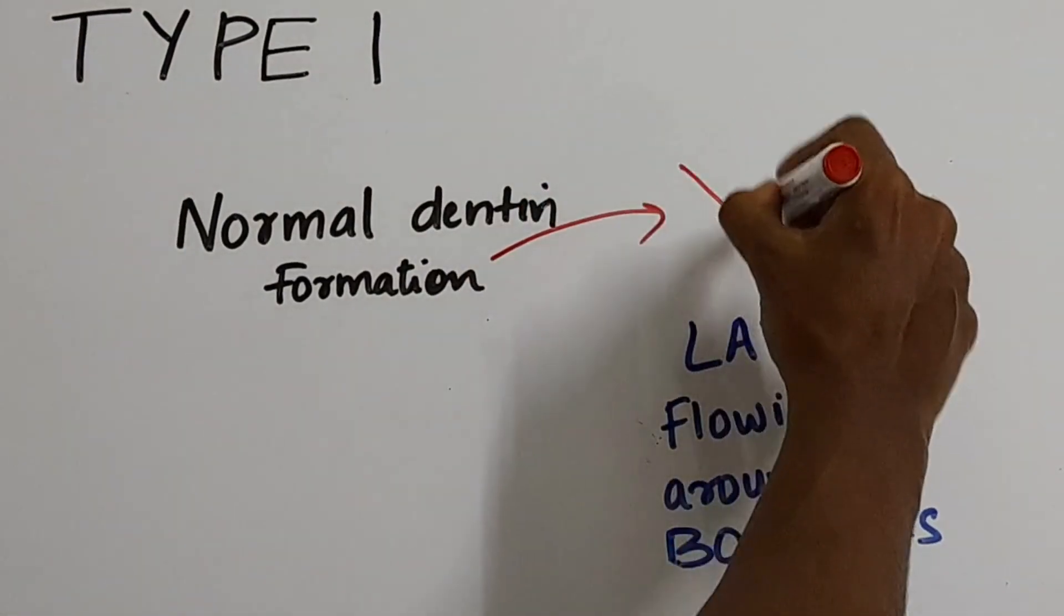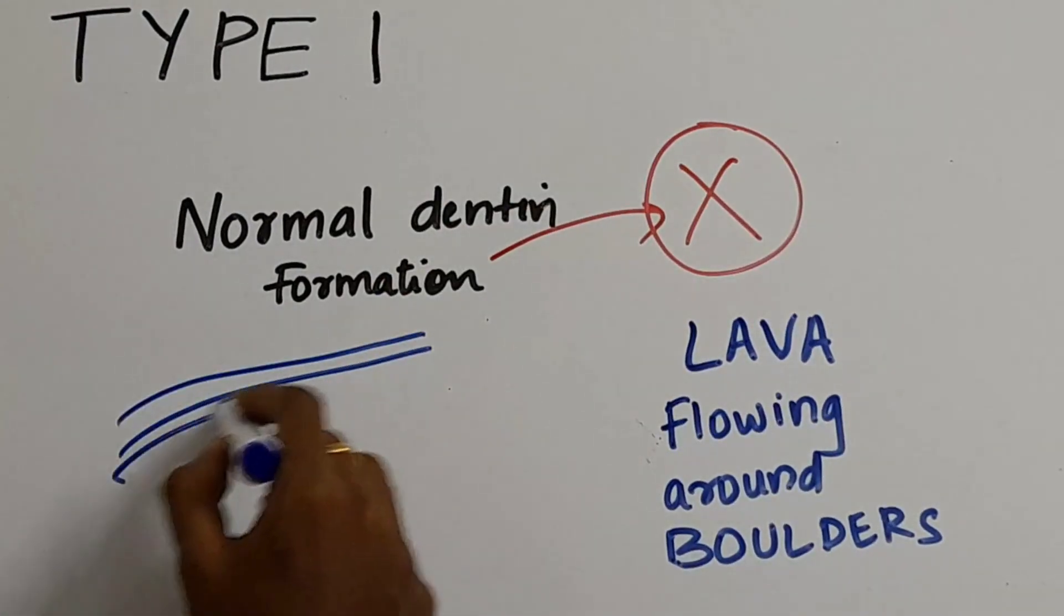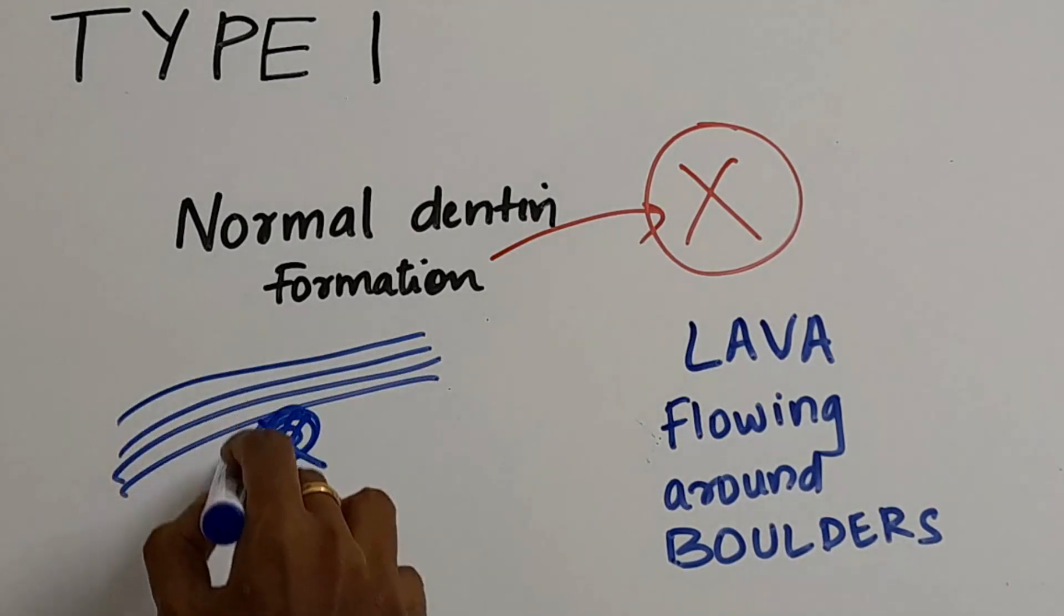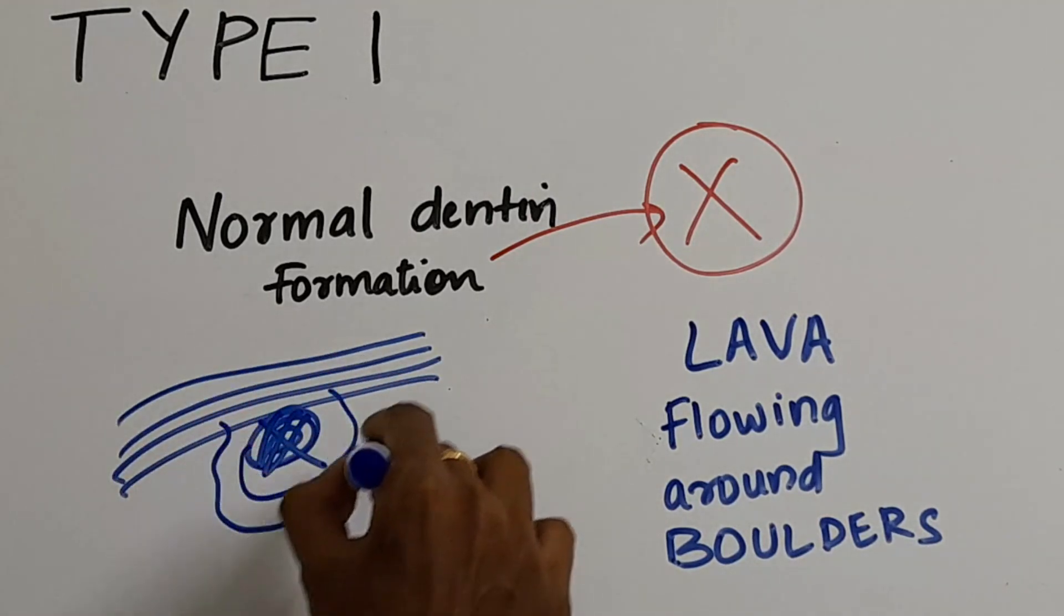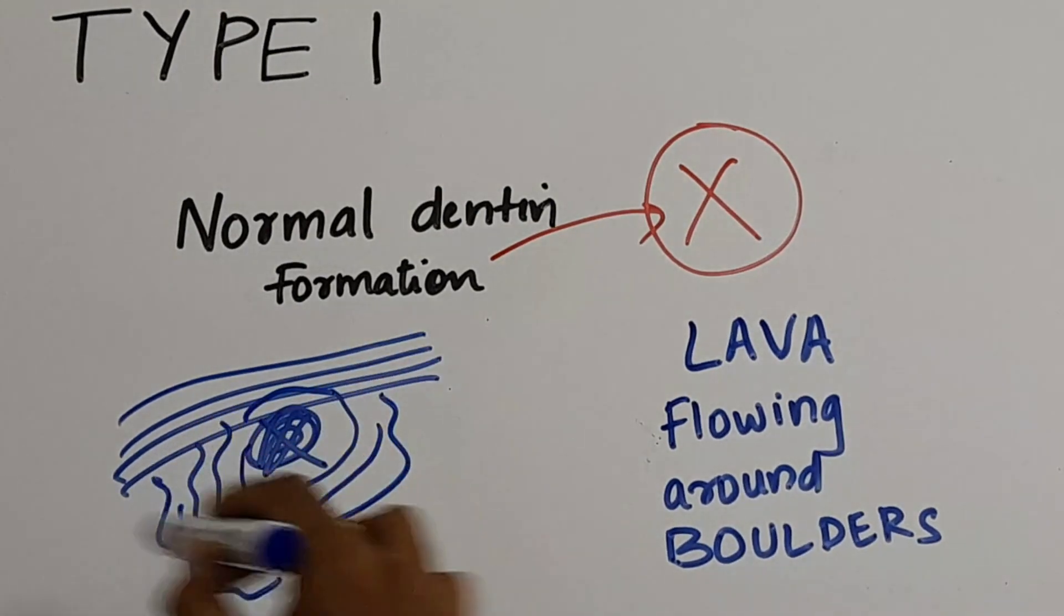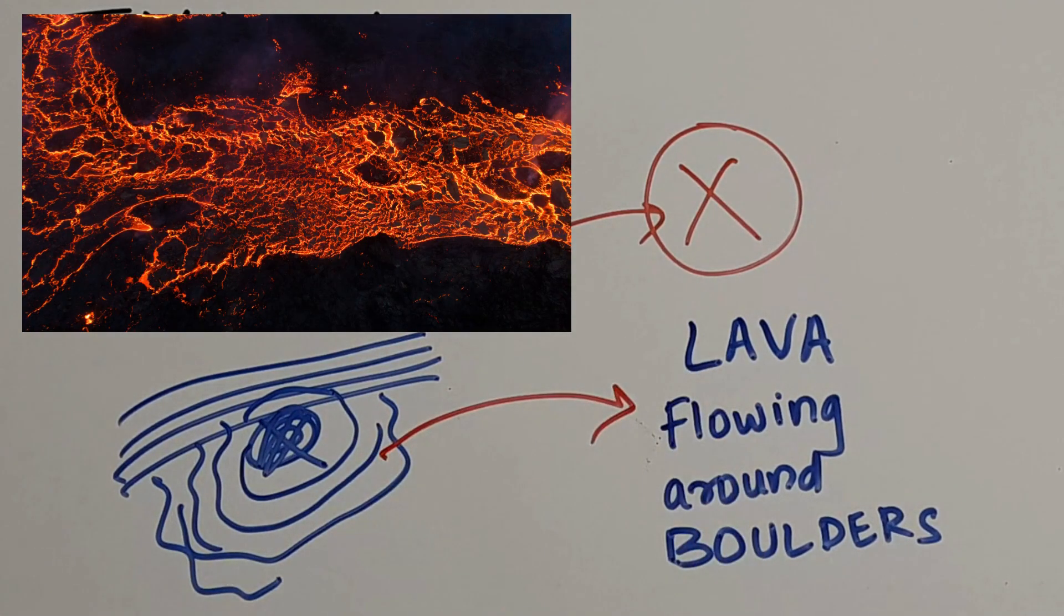In Type 1, you'll notice that the normal dentine formation is blocked. So suppose this is dentine that is being formed, and if the normal dentine formation is blocked, you will see that new dentine is formed around these obstacles. Now this appears like lava flowing around boulders.